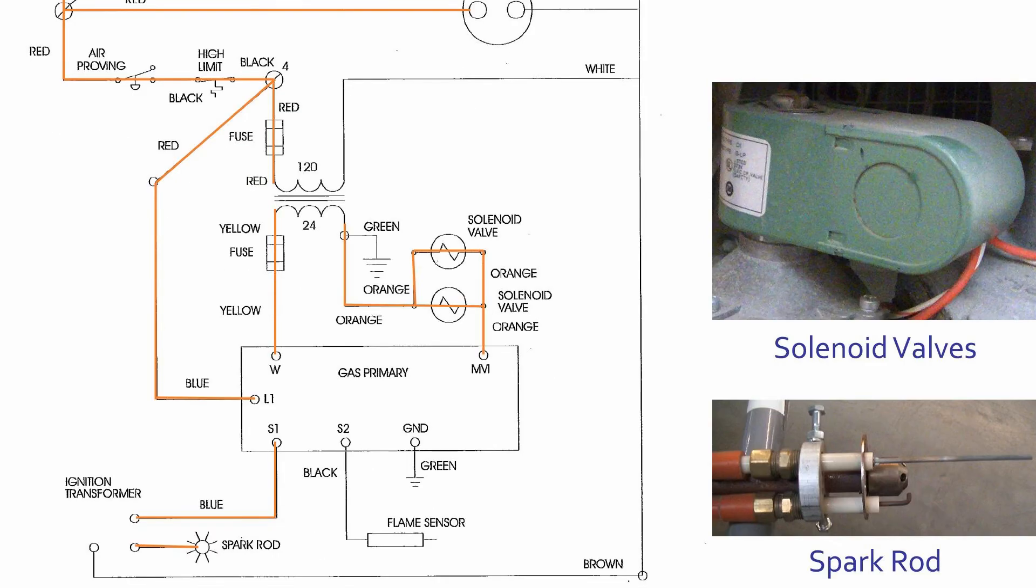The primary gas control opens the two green solenoid valves to allow fuel to the burner. The ignition transformer sends power to the spark rod and the burner is ignited.